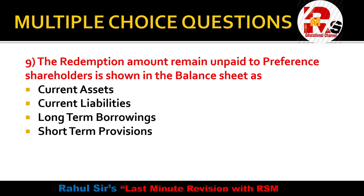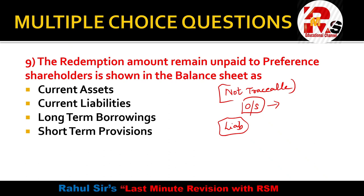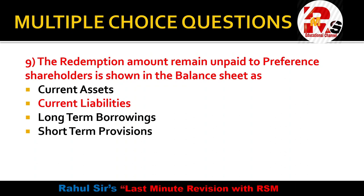Question 9: The redemption amount that remains unpaid to preference shareholders is shown in the balance sheet as — current assets, current liabilities, long term borrowings, or short term provisions? Sometimes shareholders cannot be traced due to incorrect addresses, so the payment remains outstanding. The company must still pay them, and this is shown on the liability side. The right answer is current liabilities, because it is a liability the company will pay.